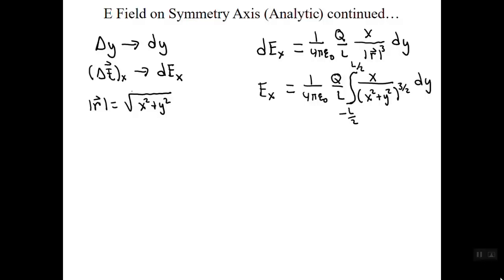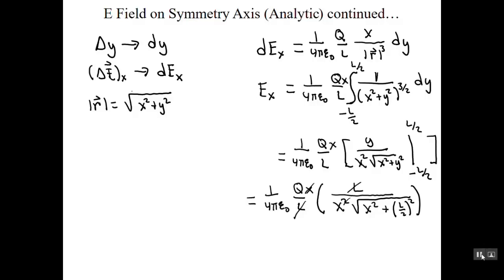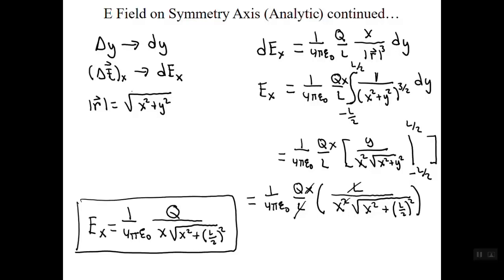To do this integral, we need to look up the indefinite integral of this form, which ends up being this. We then evaluate over the limits and simplify to obtain this result: the net electric field of the rod for observation locations a distance x from the rod along the symmetry axis. Recall again that all other components of the net electric field of the rod are 0 for observation locations on this axis.